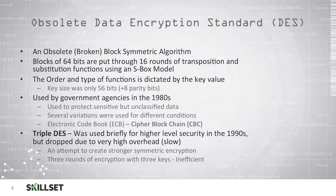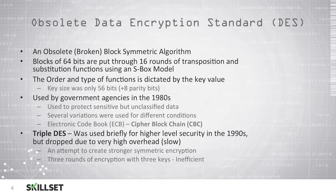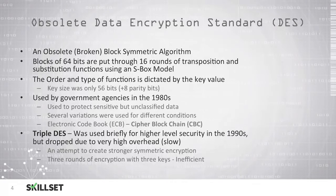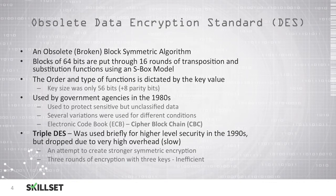Data Encryption Standard or DES is an older, obsolete, and broken symmetric encryption technology. DES takes blocks of 64 bits and puts them through 16 rounds of transposition and substitution functions using an S-box model. The order and type of the functions is dictated by the key value, and with DES the key size was only 56 bits plus 8 parity bits. This was used by government agencies in the 1980s to protect data that was sensitive but unclassified.